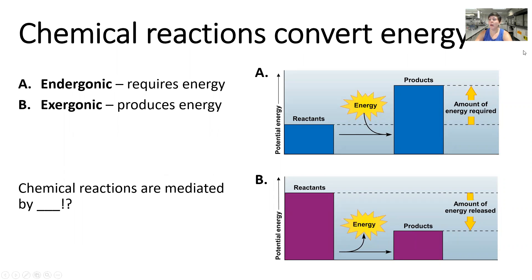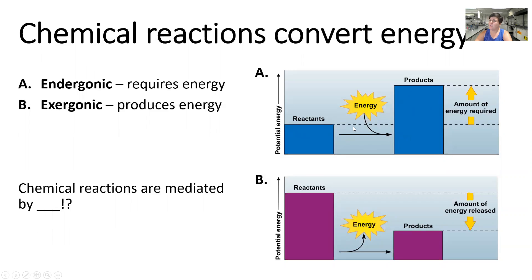Endergonic reactions are those that require energy. The reason they require energy is because we are building bonds. If we're building bonds, that means that the molecules going into a chemical reaction are smaller than the molecules coming out. So the reactants are smaller than the products — you're adding bonds between them. Building bonds requires an investment of energy that you're storing in that bond, so this would be called an endergonic reaction. The potential energy stored in these molecules is relatively low in the reactants and higher in the products, because you're storing energy in chemical bonds.